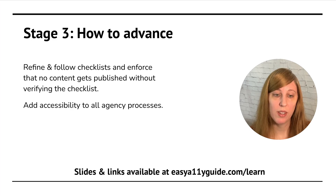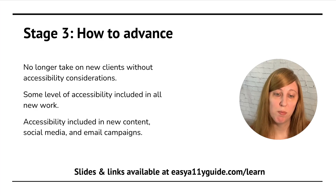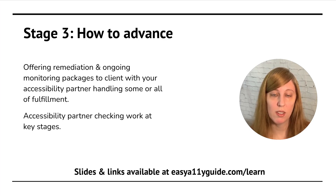To advance from stage three, you're going to refine and follow your checklists and enforce that no content gets published without going through the verification checklist. You'll be adding accessibility into all of your agency processes — it goes everywhere. You're no longer going to bring in new clients without some accessibility consideration. You're going to talk to all new clients about it, and at least the minimum is going to be put into everyone's package. You'll be offering remediation and ongoing monitoring packages to clients with your agency partner handling some or all of the fulfillment.